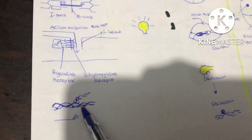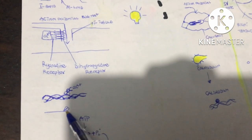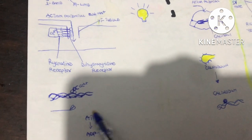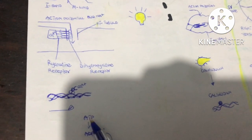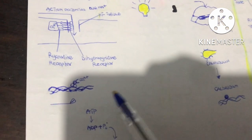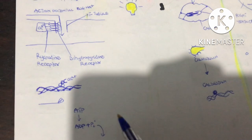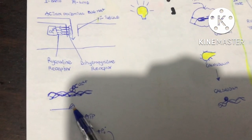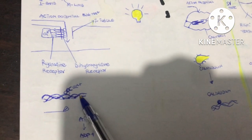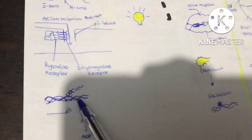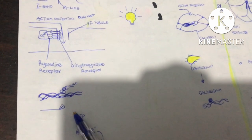The myosin head has two binding sites: an ATP binding site and an actin binding site. The ATP binding site also has ATPase activity, meaning it can break ATP down to ADP and inorganic phosphate. When ATP binds to the myosin head, it decreases the head's affinity for the myosin binding site on actin. After ATP is broken down to ADP and inorganic phosphate, the affinity for the actin binding site increases.